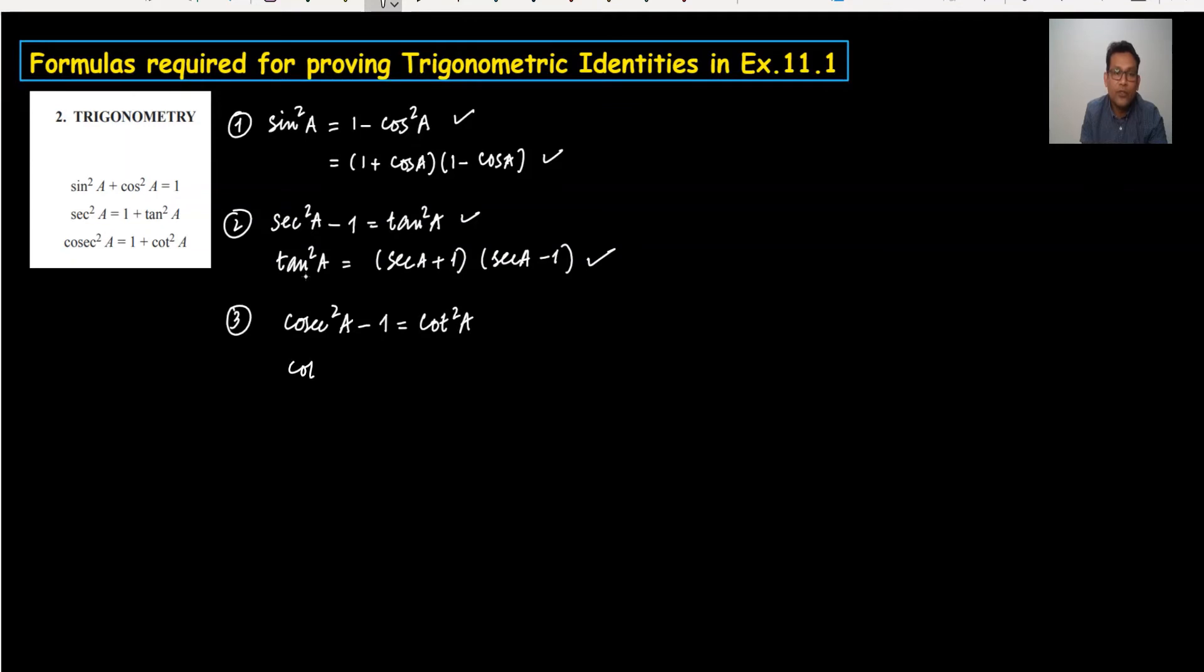Now cot²a equals (cosec a + 1)(cosec a - 1). This is called the factor form and this is expanded form.